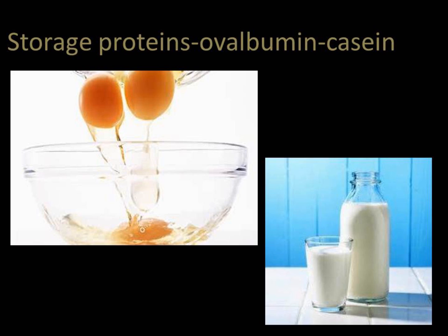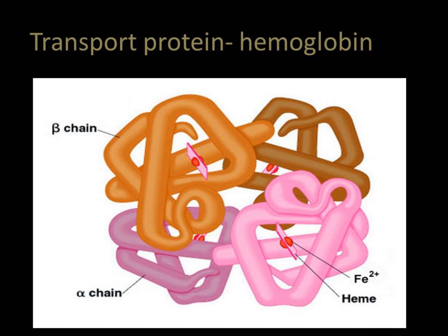Transport proteins are carrier proteins which move molecules from one place to another around the body. Examples include hemoglobin and cytochrome. Hemoglobin transports oxygen through the blood. Cytochromes operate in the electron transport chain as electron carrier proteins.